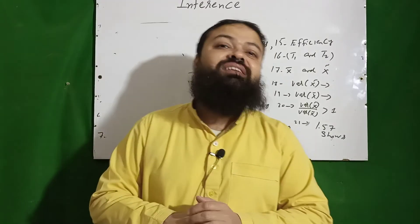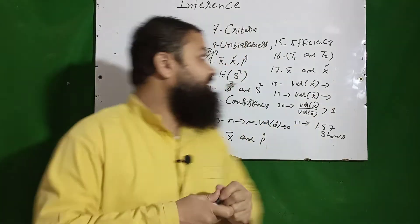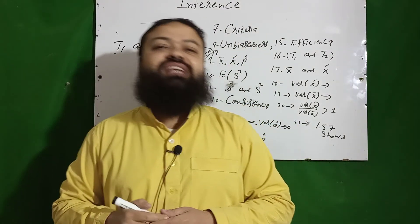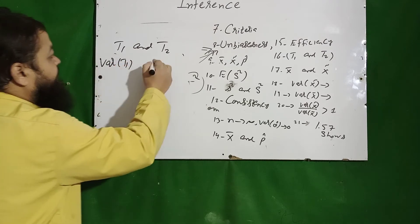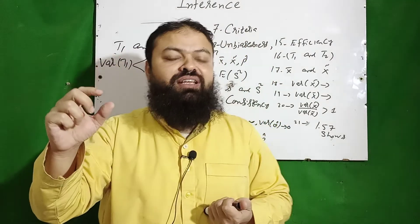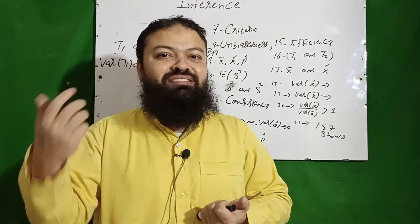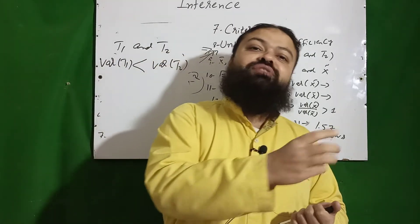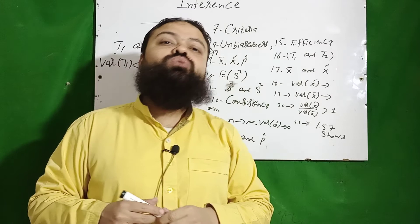Efficiency: the condition is that the two estimators must both be unbiased. If we have two unbiased estimators t1 and t2, we calculate their variances. If Var(t1) < Var(t2), then t1 is more efficient than t2. The estimator with the smaller variance is the more efficient one.